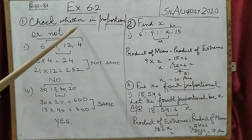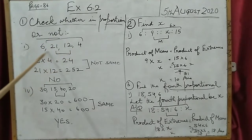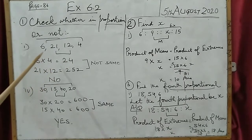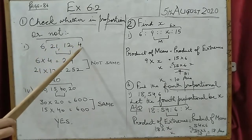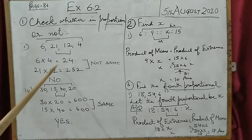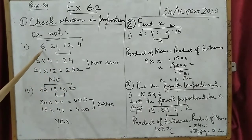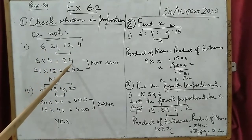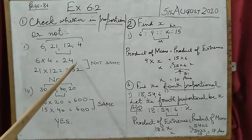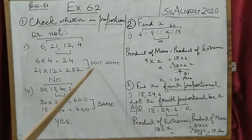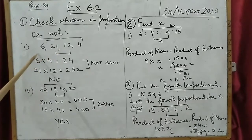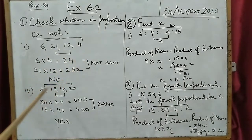Open your books, exercise 6.2, sum number 8(a). The first sum: check whether the numbers are in proportion or not. We take the first term and the last term and multiply them, then multiply the second and third terms. If I multiply 6 into 4 it is 24; 21 into 12 is 252. These two answers are not the same, so our answer is no — these are not in proportion.